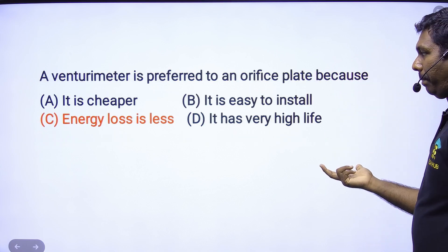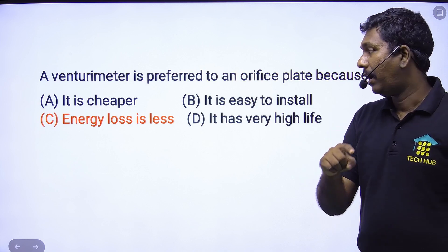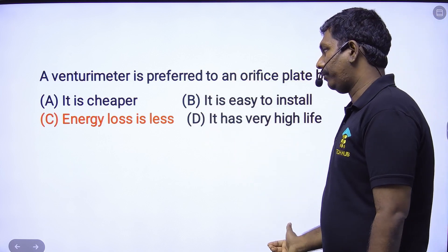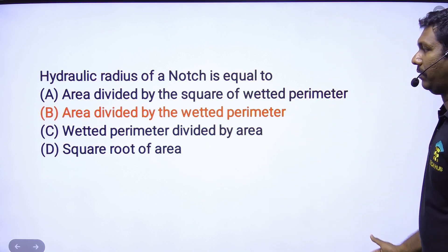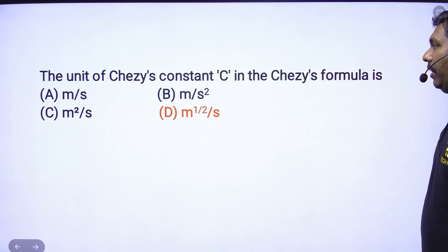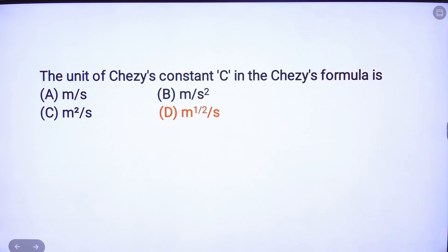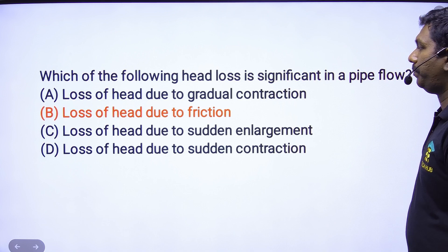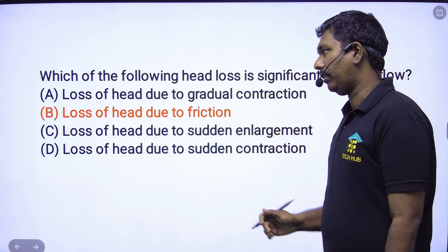Venturimeter is preferred to orifice meter — it has lesser energy loss. The CD value is 0.6 versus 0.4 to 0.8. Answer C is correct. Hydraulic radius equals wetted area divided by wetted perimeter — option B is the answer. Chezy's number: unit is root meter per second. V equals C root(mi) is the basic formula. Substitute: unit is root meter per second. Which head loss is significant in pipe flow? Major loss — that is friction, loss of head due to friction. Option B.